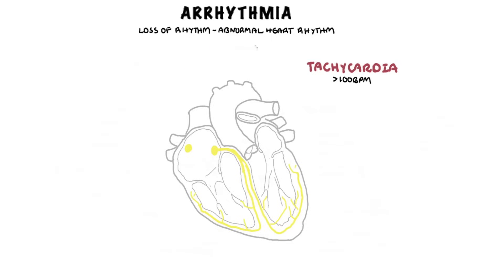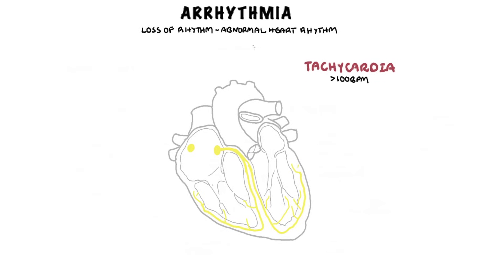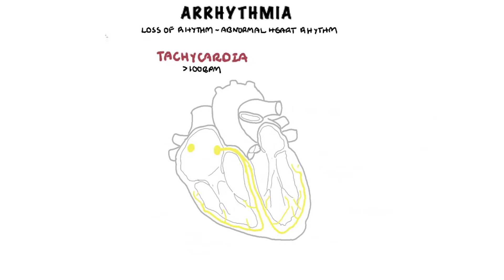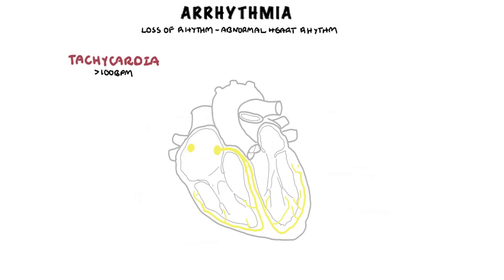Tachycardia is a heart rate greater than 100 beats per minute, and people can be asymptomatic or experience palpitations, skipping beats, dizziness, chest discomfort, shortness of breath, and even presyncope and syncope. Tachyarrhythmias can be classified according to their mechanism.